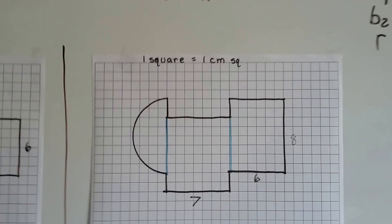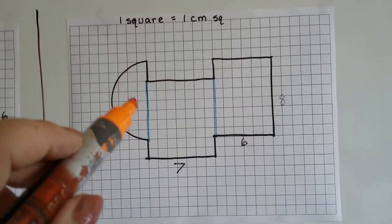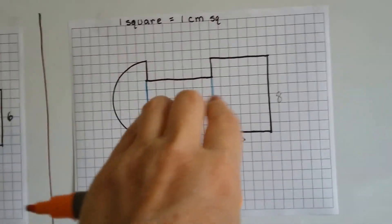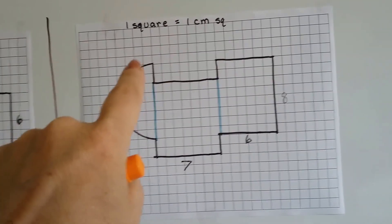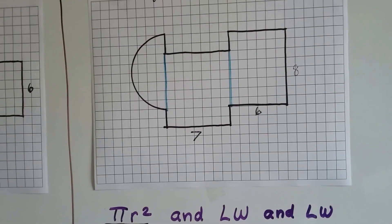Now, this one says that 1 square is 1 centimeter. So, what I saw, these lines weren't here, what I saw was a semicircle and 2 rectangles. Well, that's not that hard. We did circles in the last video.